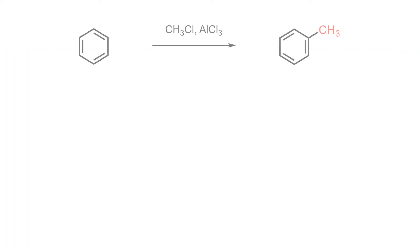Alkyl benzenes are very important materials in organic synthesis and they may be produced through the reaction of benzene with an alkyl halide in the presence of a Lewis acid. This allows for electrophilic aromatic substitution to occur, in which a proton on the benzene ring is replaced by an alkyl group.